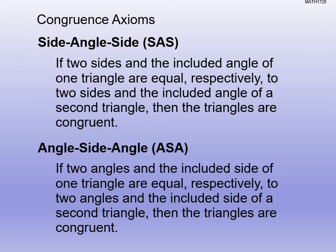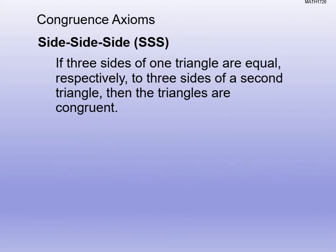Remember when it says 'included' for side-angle-side, the angle has to be between the two sides. For angle-side-angle, that side has to be between the two specified angles. If we have a side-side-side axiom, if three sides of one triangle are equal respectively to three sides of a second triangle, then we can call the triangles congruent.